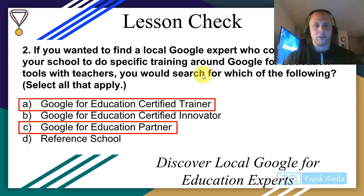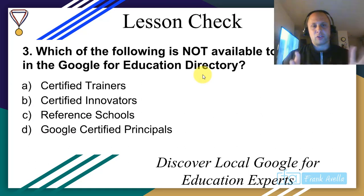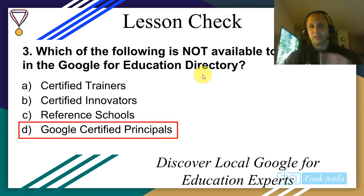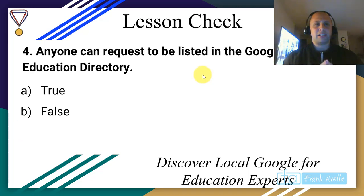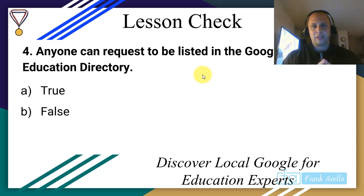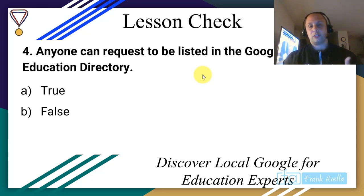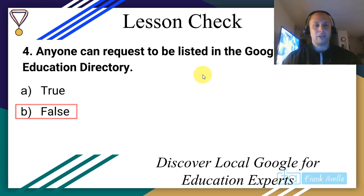What's not available in the directory? I mentioned certified trainers, certified innovators, reference schools, and partners — 'Google Certified Principles' is never mentioned, so that's not in the directory. Can anyone request to be listed in the Google for Education directory? No — you have to be certified. I had to pass level one, level two, and the certified trainer test and be accepted. Anyone cannot just be listed, so that's false.